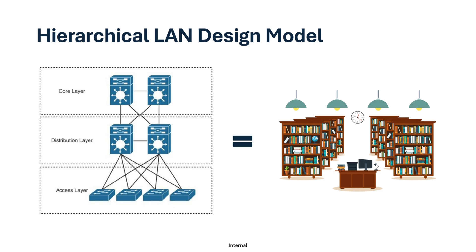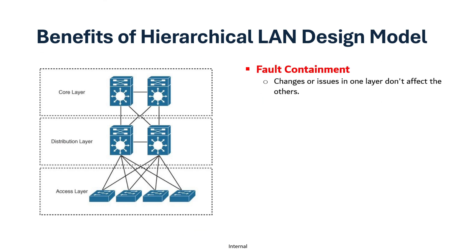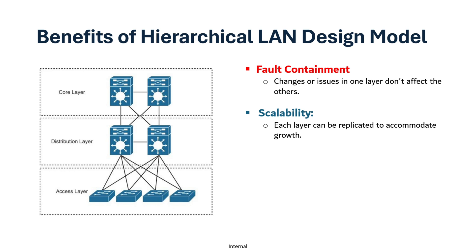Let's look at some of the benefits of this model. The first one is fault containment — any changes or issues in one layer will not affect the others. Then there is scalability because each layer can be replicated to accommodate growth. For example, if you have more users, you can just add the access layer. If you have multiple buildings, you can just add the distribution or core layer.